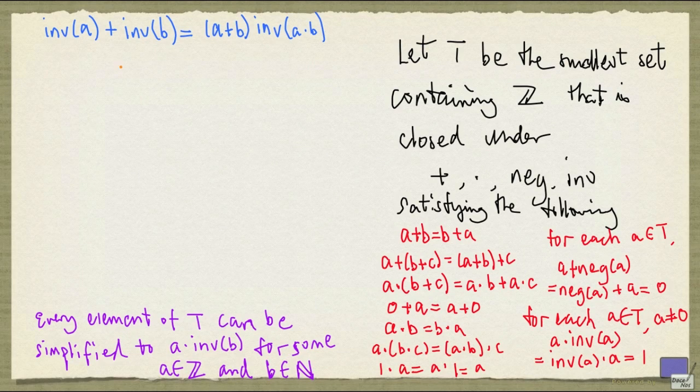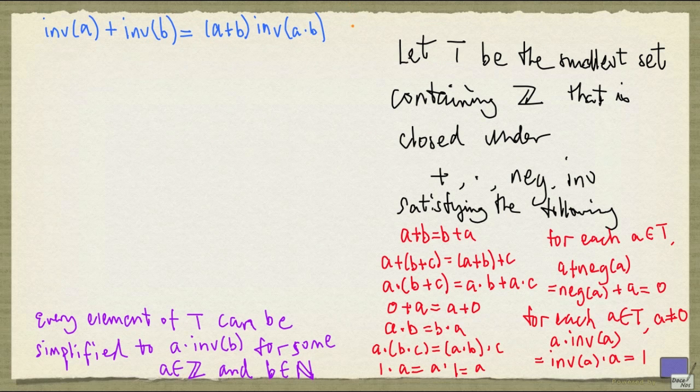The inverse of a plus the inverse of b equals (a plus b) times the inverse of (a times b). And this corresponds to the notion of 1/a plus 1/b equals (a plus b)/(a times b).